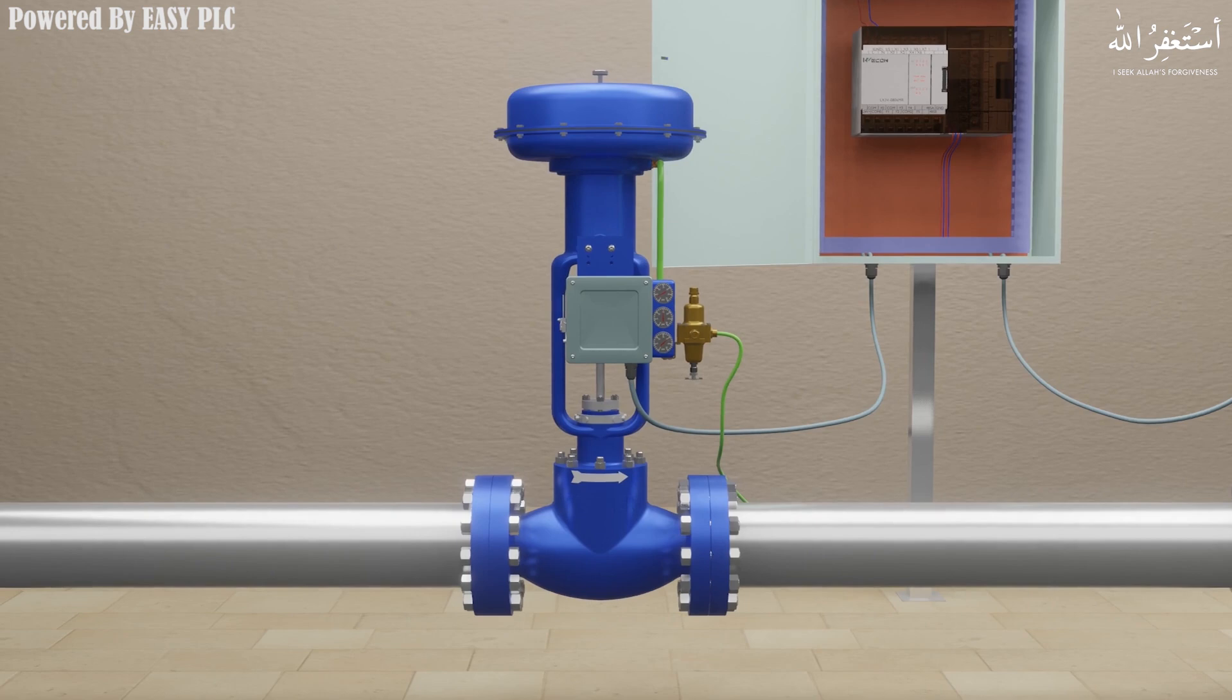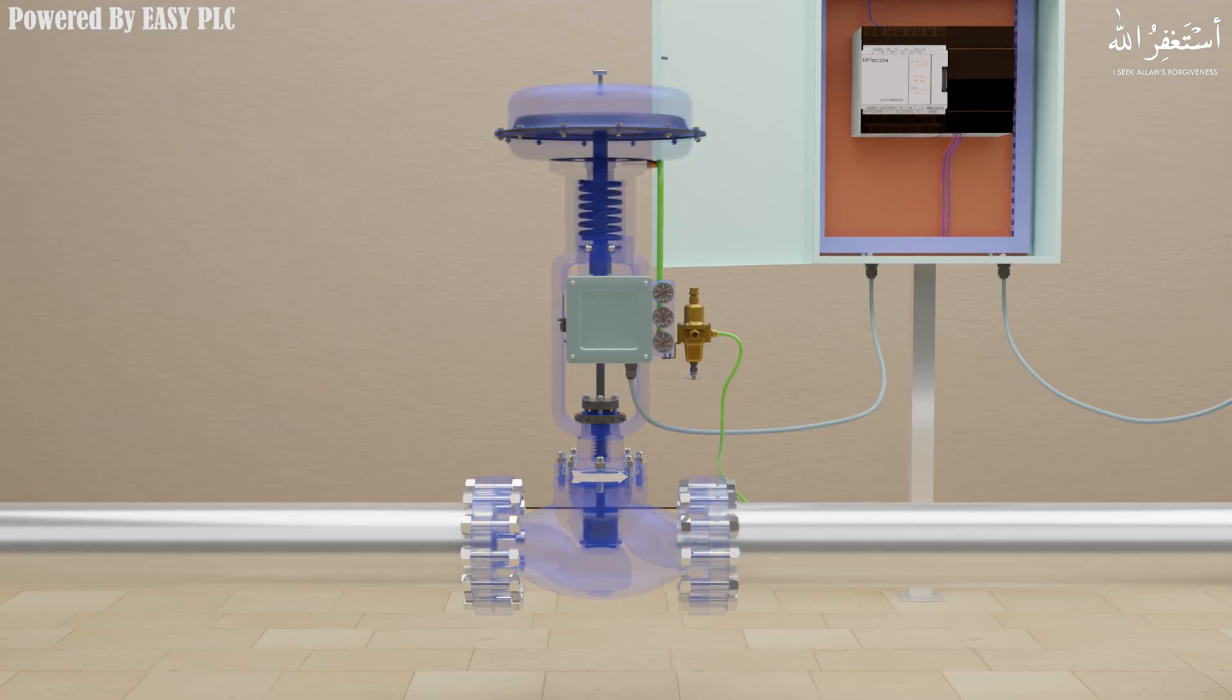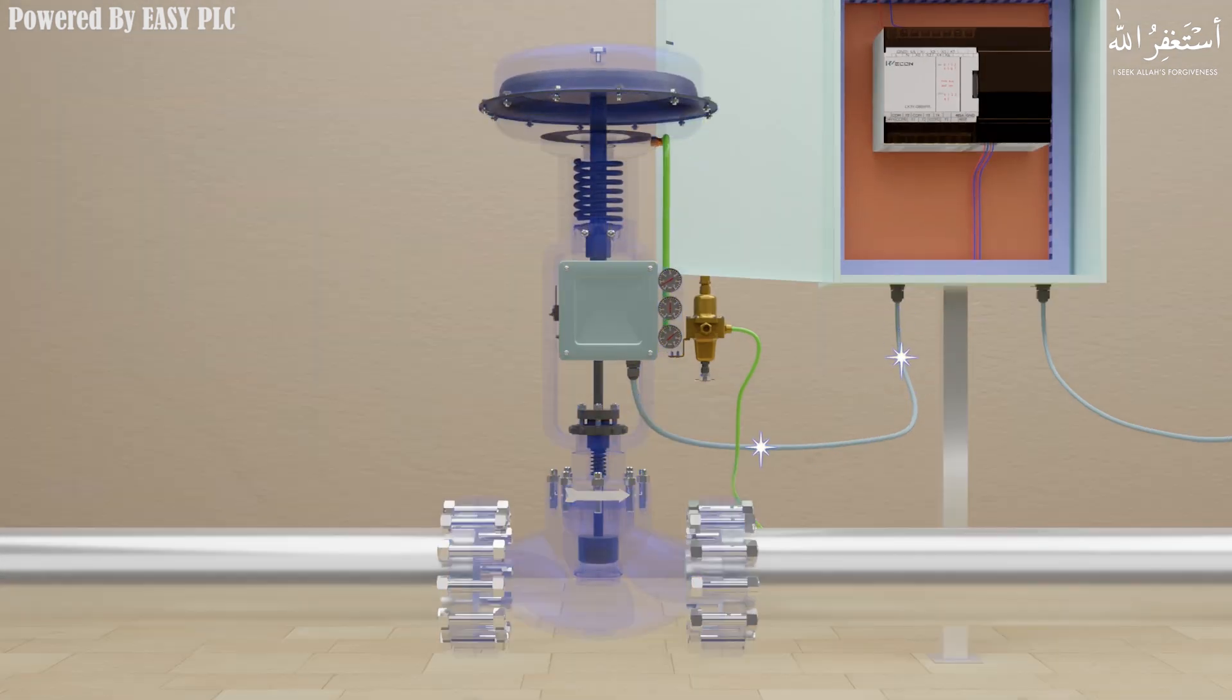A control valve can be operated electrically, pneumatically, or hydraulically. A control valve receives a signal from a controller, for example from a PLC, in order for it to move, resulting in a change in flow rate.